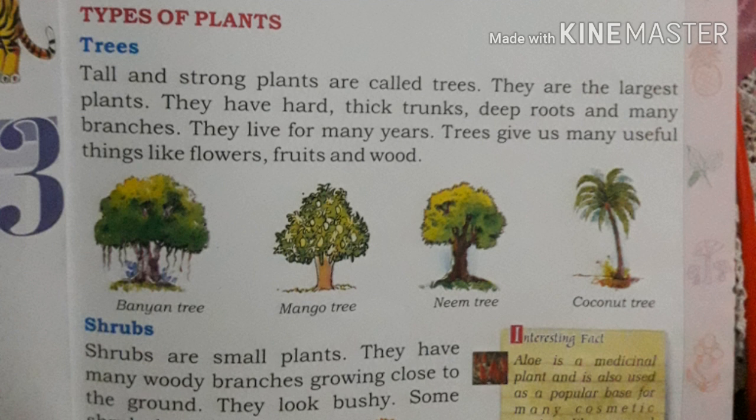Trees like the neem tree are the largest plants. They have hard, thick trunks, deep roots, and many branches. The trunk is the middle portion of the plant, and it is thick and strong. Trees live for many years. Trees give us many useful things like flowers, fruits, and wood.